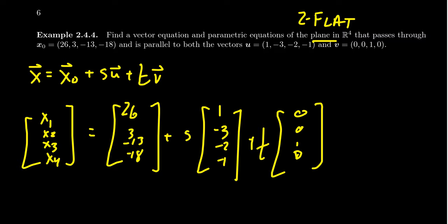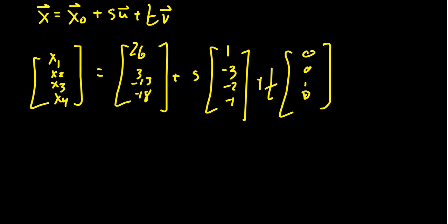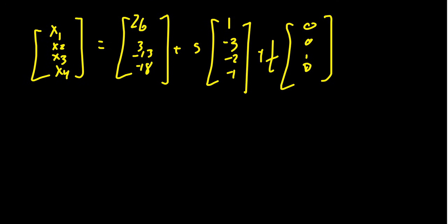And then from here, our parametric equations are essentially immediate. We get that X1 equals 26 plus S, plus 0T, which just disappears. X2 equals 3 minus 3S, plus again 0T.